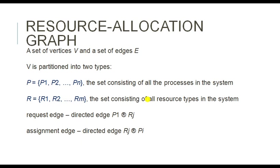Now we will discuss the resource allocation graph. The resource allocation graph is a graphical representation of the processes, resources, and their requests. Using a resource allocation graph, we can identify whether a deadlock will occur or not. In the resource allocation graph, we use certain graphical elements: process, resource, request edge, and assignment edge. Processes are identified by circles, resources by squares, and request and assignment edges by arrow symbols.